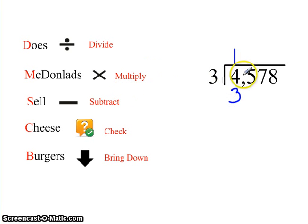Now I'm going to subtract. 4 minus 3 is 1. Notice how I've lined up. This is the thousands place and I've lined everything up. Now I'm going to check. 1 is less than 3. And bring down my next number.